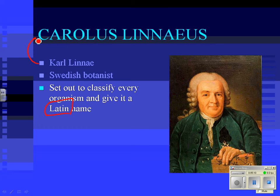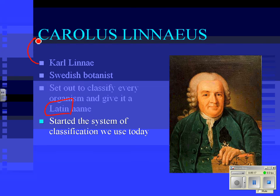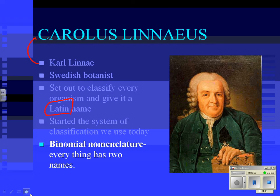Think about it — naming every organism in the world would take a long time. We still use Carl Linnaeus' system of classification today. That system is called binomial nomenclature. Binomial nomenclature means that every living thing has two names. 'Bi' means two, and 'nomenclature' literally means naming, so it's two-name naming. He set out to give every living thing two names.